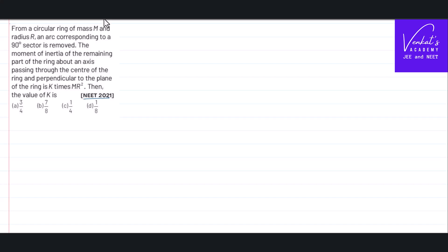This is an E2021 question from rotational dynamics. The question is like this: From a circular ring of mass M and radius R, an arc corresponding to 90 degrees sector is removed.